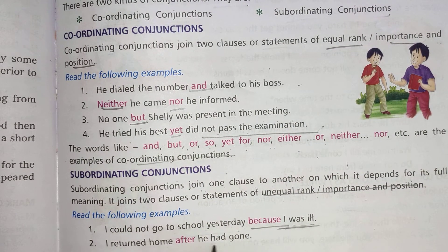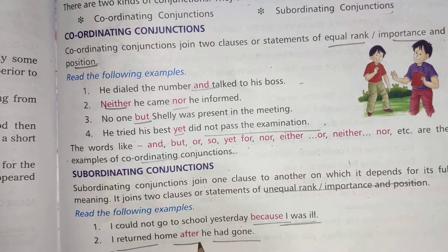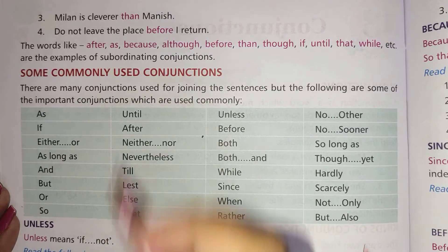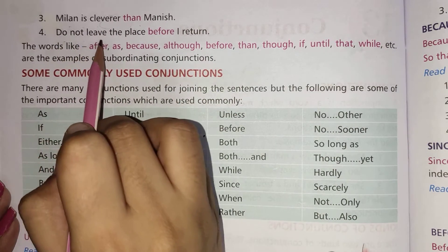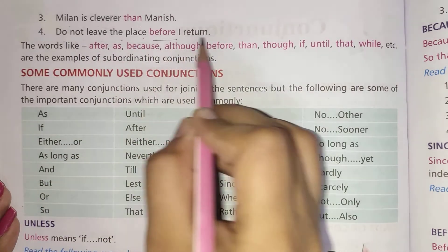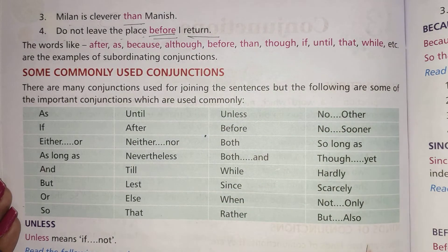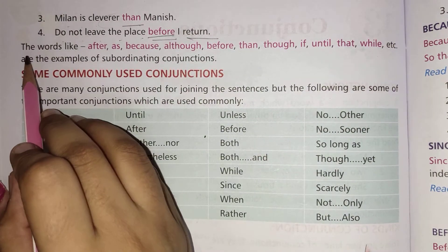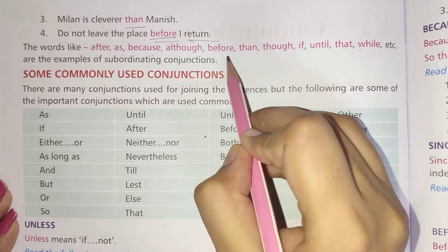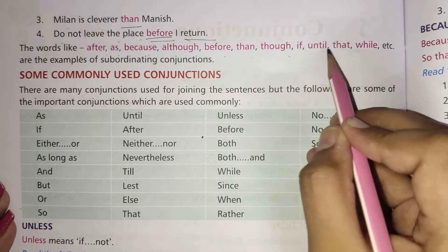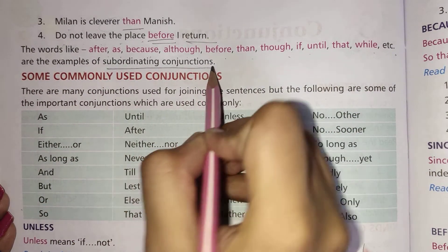'I returned home after he had gone.' Here 'after' is working as a conjunction. 'Minan is cleverer than Manish.' 'Do not leave the place before I return.' Here 'than' and 'before' are both subordinating conjunctions. Words like 'after', 'as', 'because', 'although', 'before', 'then', 'though', 'if', 'until', 'that', 'while', etc. are examples of subordinating conjunction.